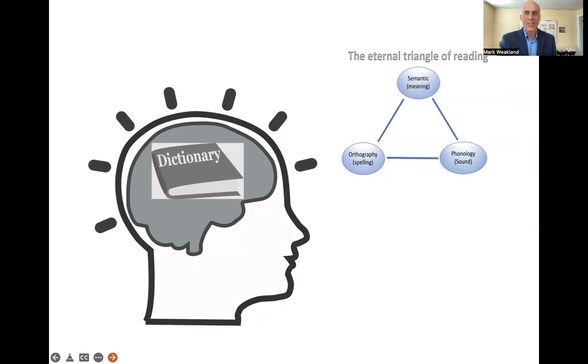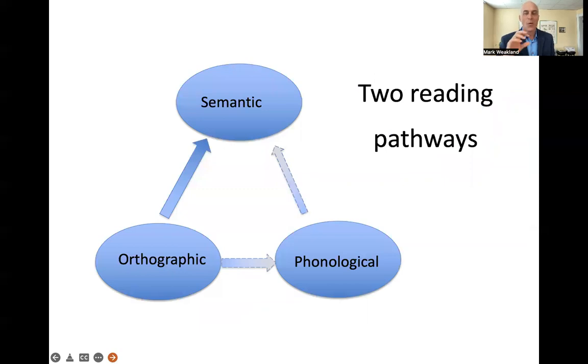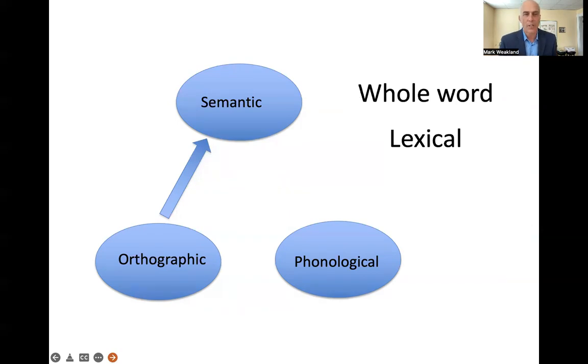And you can talk to your students about the dictionary in their brain and how we want to build that dictionary so it's full of English language words that we instantly recognize. We automatically recognize, automatic word recognition. So critical, important, foundational to the reading process. The orthographic system is super important because it comes into play with how we read. There are two reading pathways in our brains. One is the whole word or the lexical. That's what lexical is all about. Lexia, lexicon, lexical, dyslexia.